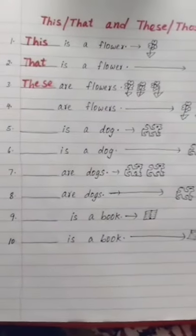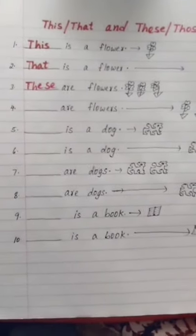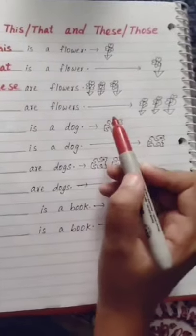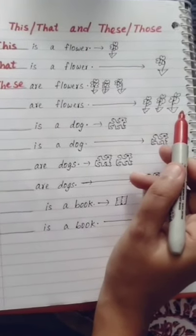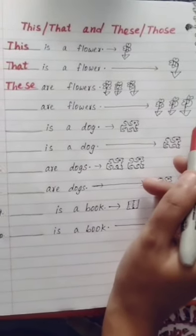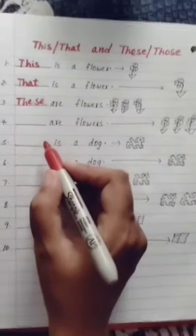Fourth example: the flowers are four and they are far away. So we have to use 'those' — those are flowers.